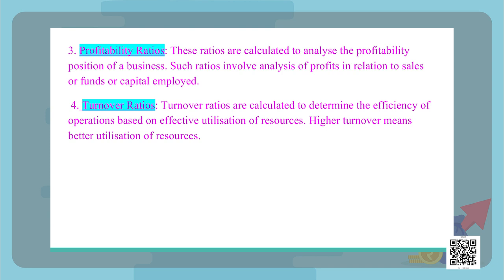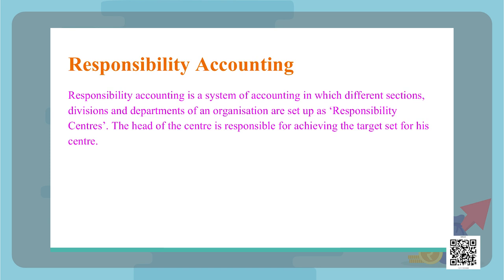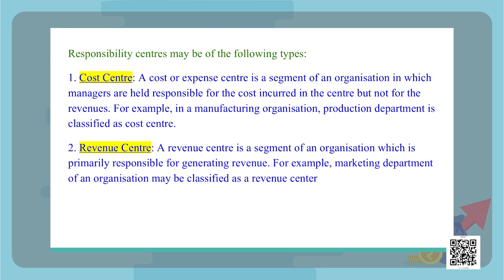Then we have responsibility accounting. It is a system of accounting where different sections, divisions, and departments of an organization are set up as responsibility centers, and the head of each center is responsible for achieving the target set. The various types of responsibility centers include cost centers — a cost center is a segment of an organization where managers are held responsible for costs incurred but not for revenue. For example, in a manufacturing organization, the production department is a cost center as it only incurs expenses but does not generate revenue.